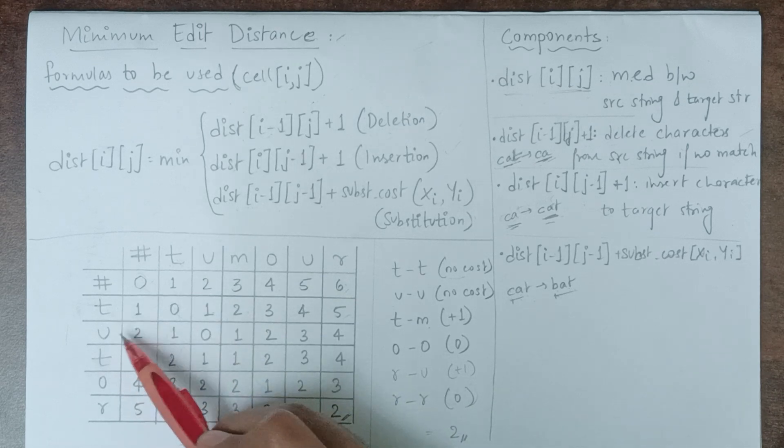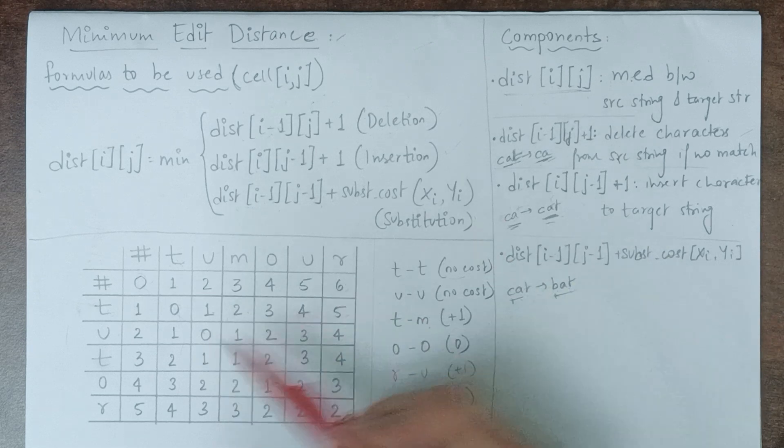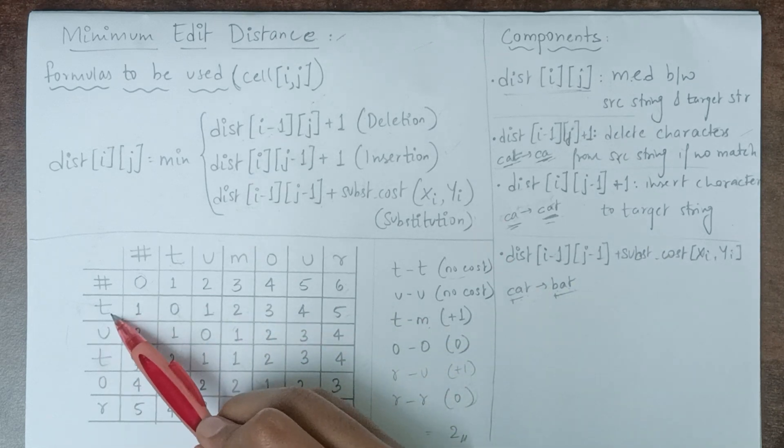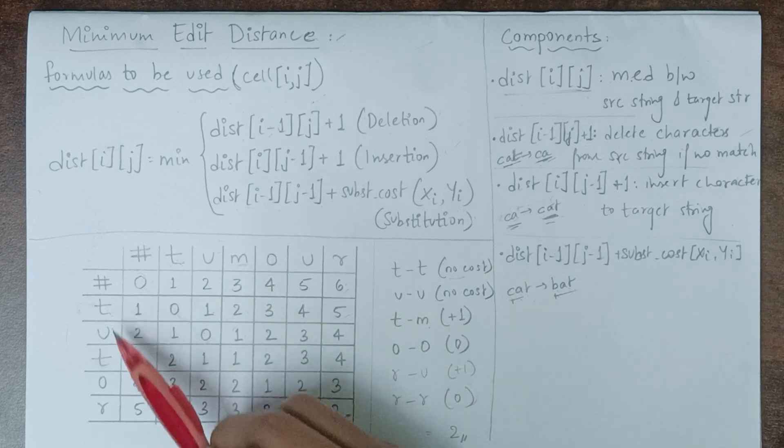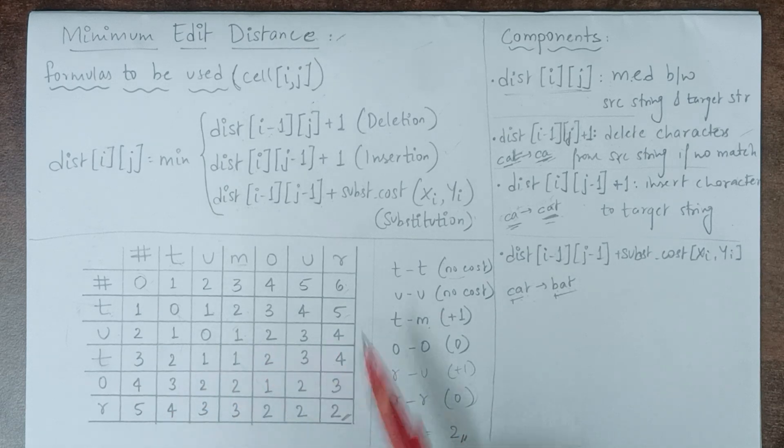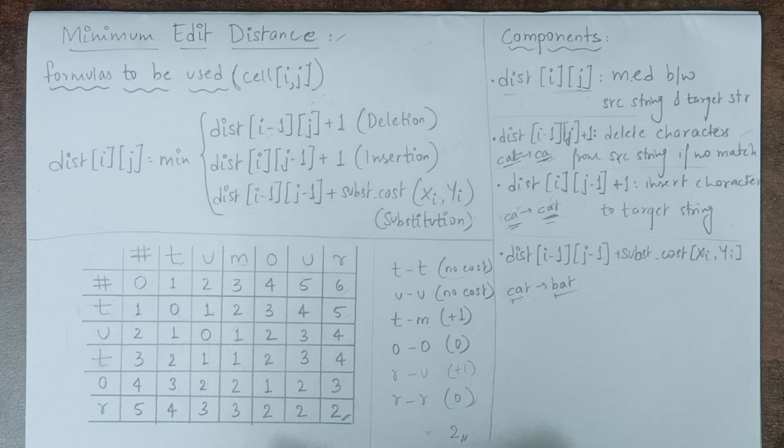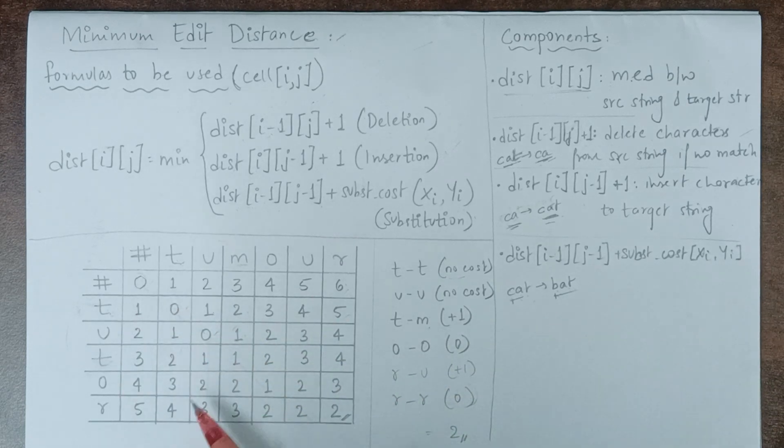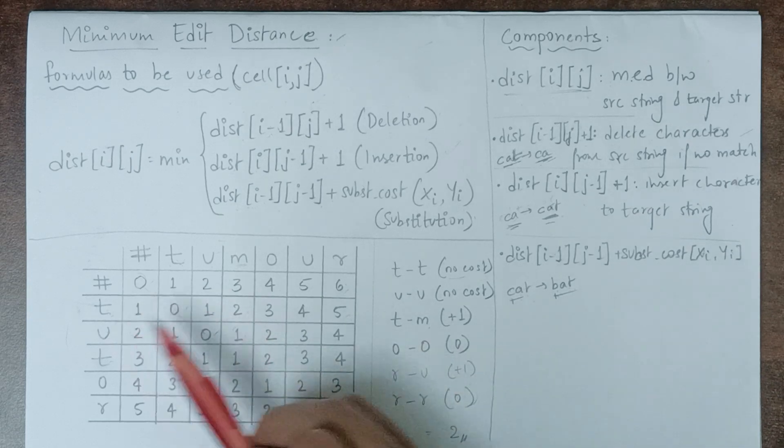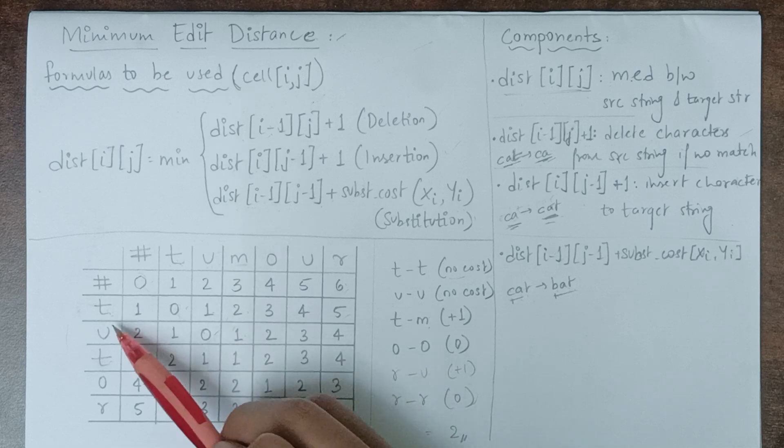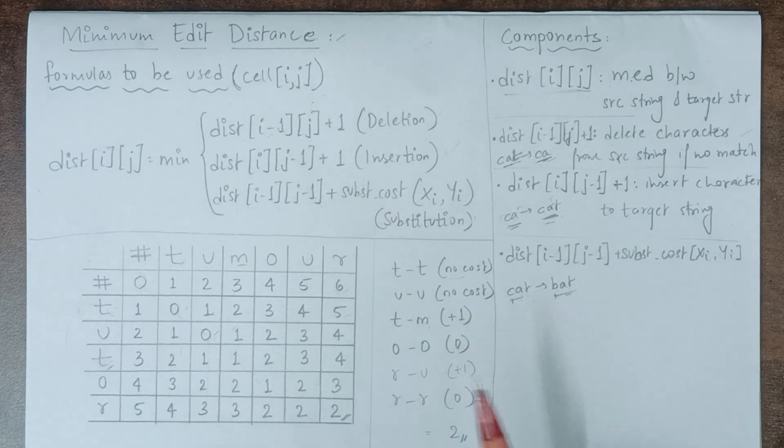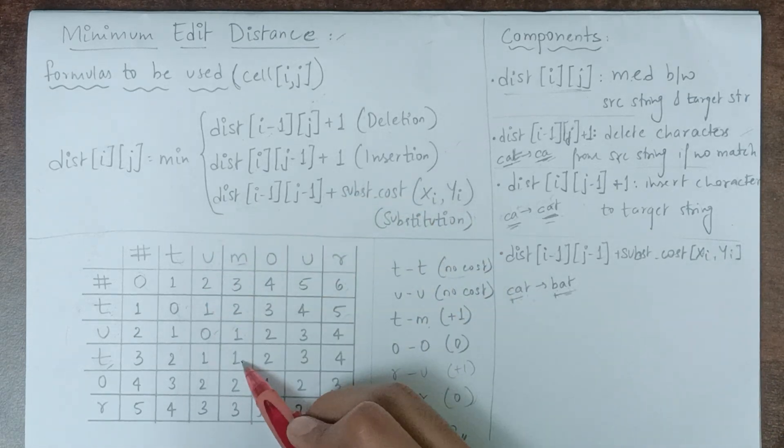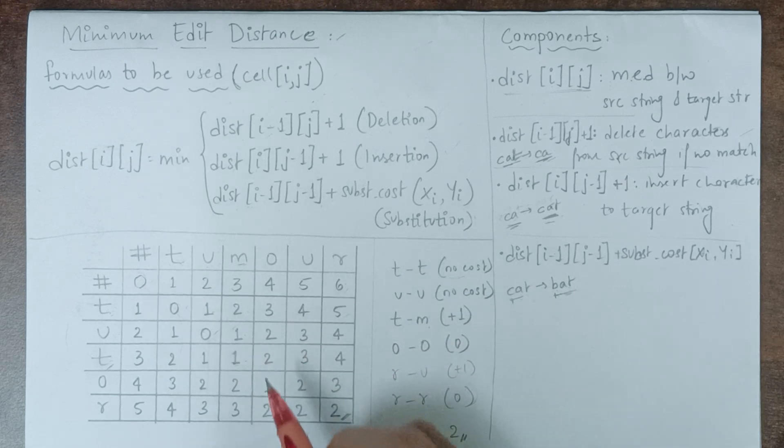Moving on, from 'tu' to 'tu' we notice there are 0 changes. The 1 over here is because from 'tu' to 'tum', the conversion cost is 1 since you need to add one character. That logic is followed across the entire row and column. Now for 'tut' to 'tum', we have 'tu' to 'tu' with no change, but from 'tut' to 'tum' you need one substitution—substitute t into m. So we put 1 there.